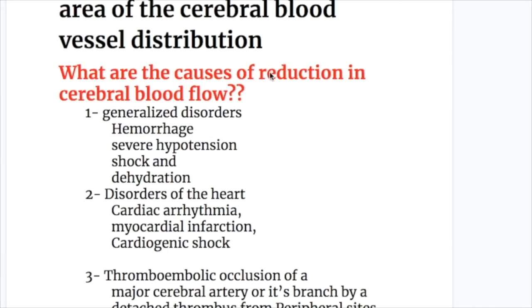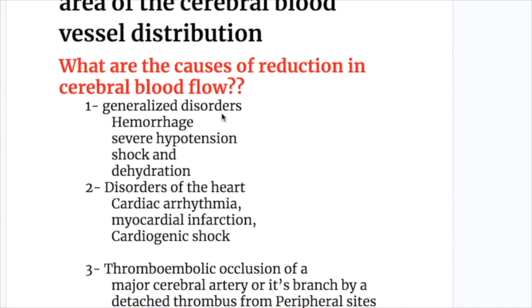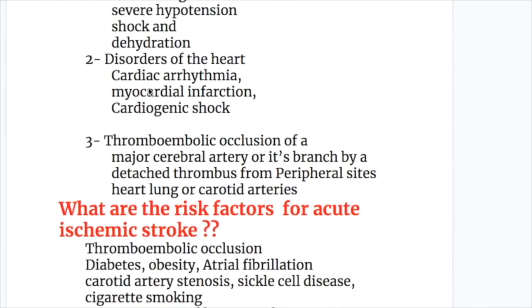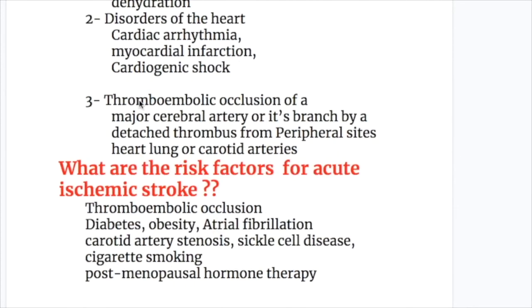What are the causes of reduction in cerebral blood flow? Number one, generalized disorders: hemorrhage, severe hypotension, shock, and dehydration. Number two, disorders of the heart: cardiac arrhythmias, myocardial infarction, and cardiogenic shock. Number three, thromboembolic occlusion of a major artery or its branch by a detached thrombus from peripheral sites like the heart, lung, or carotid artery.